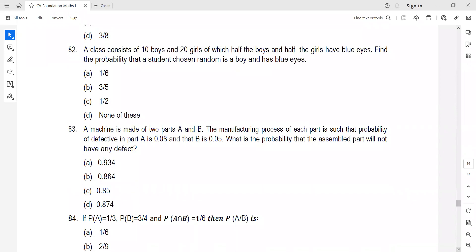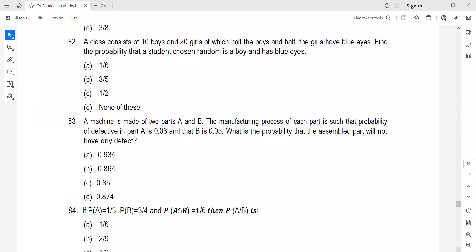A class consists of 10 boys and 20 girls. Half the boys and half the girls have blue eyes. So 5 boys have blue eyes, 10 girls have blue eyes. Probability a student chosen at random is a boy with blue eyes: 5 favorable outcomes divided by 30 total students. That's 5 by 30, which is 1 by 6. Option A.